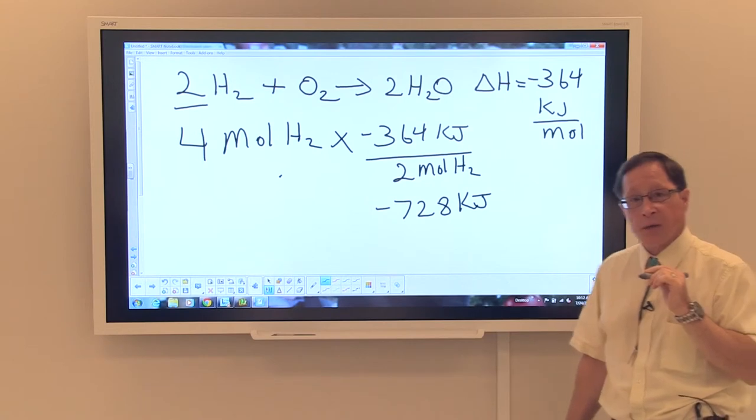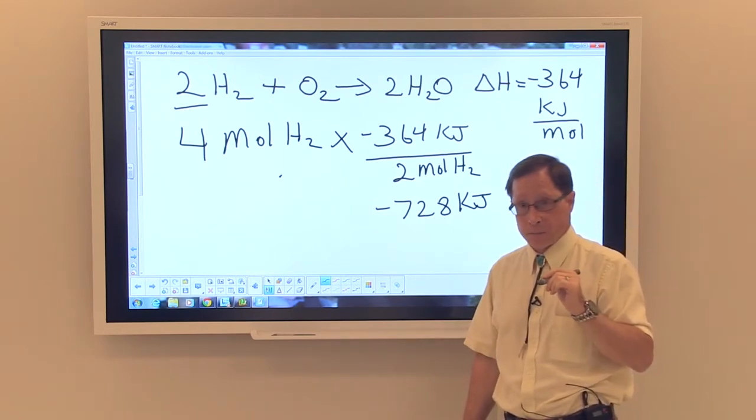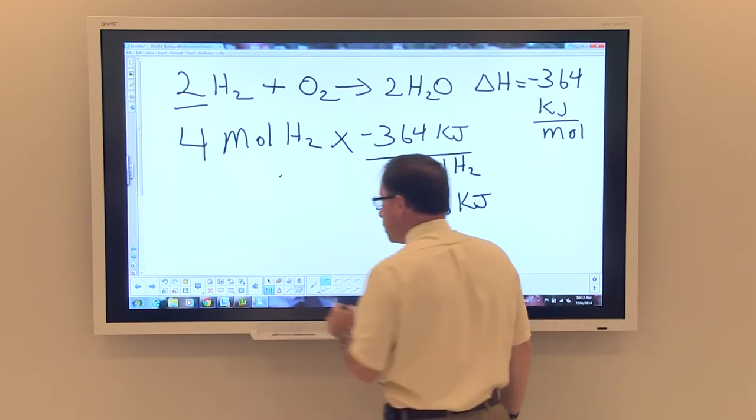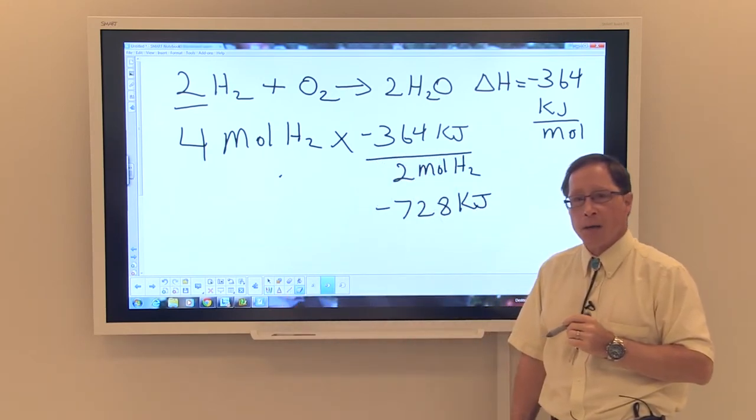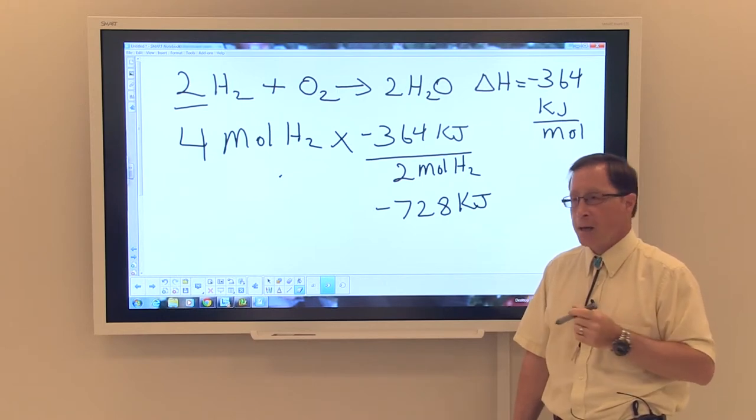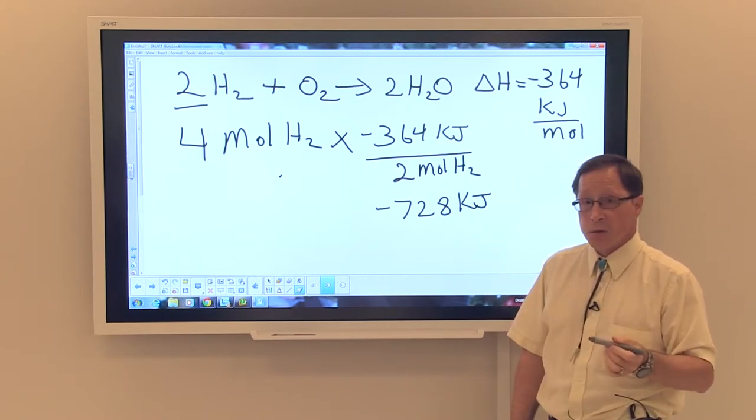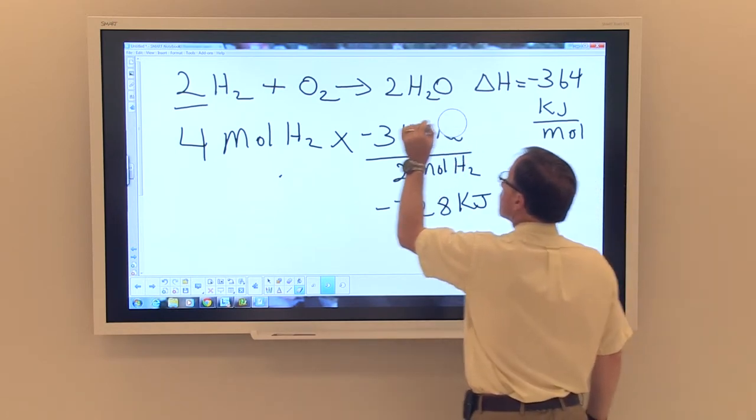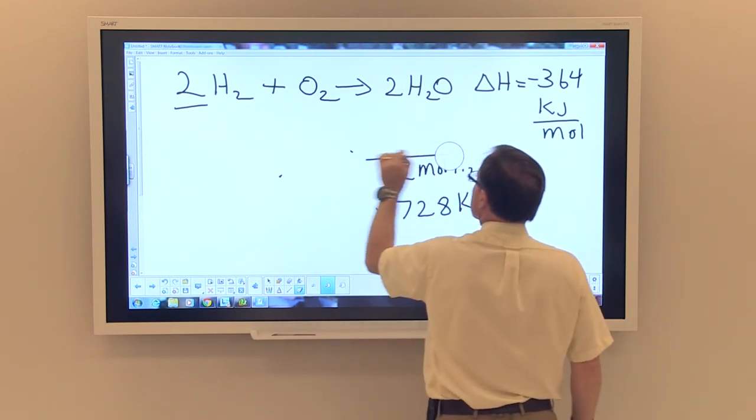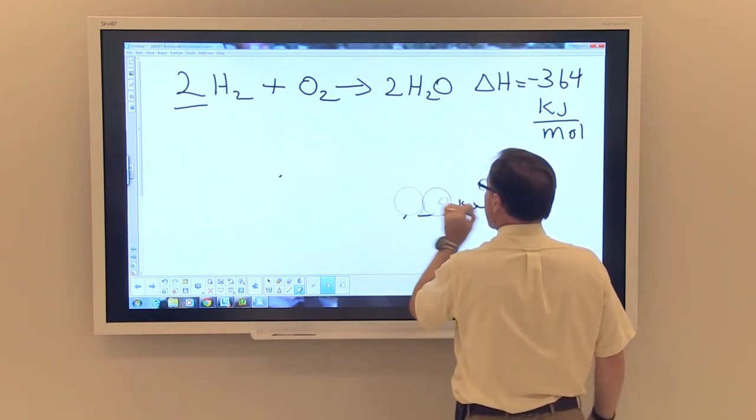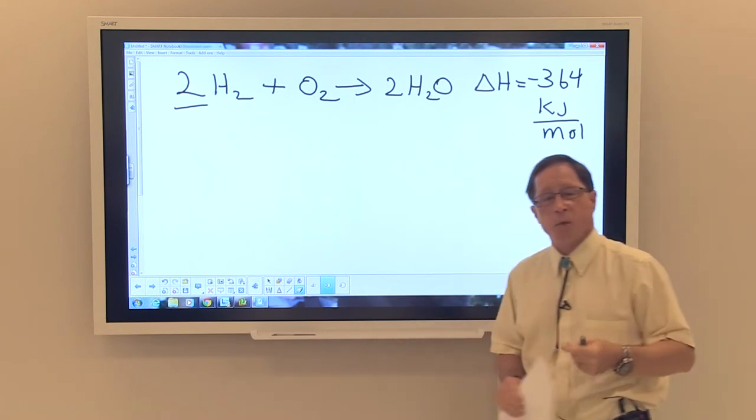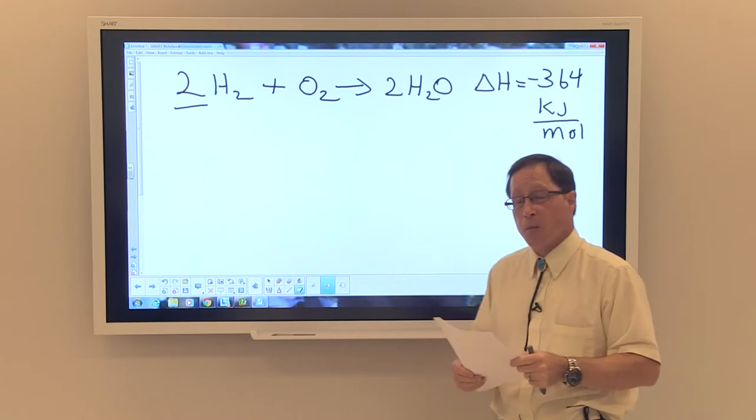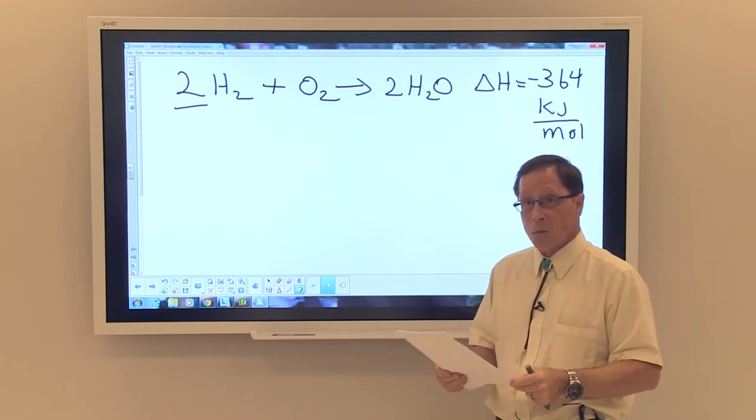Now, let's think about this from a different direction. Suppose that instead of knowing how much reactants we had, we simply knew the amount of energy that we got out of the reaction. And let's say that we had an unknown mixture which had plenty of oxygen available and wanted to know how much hydrogen was reacted.